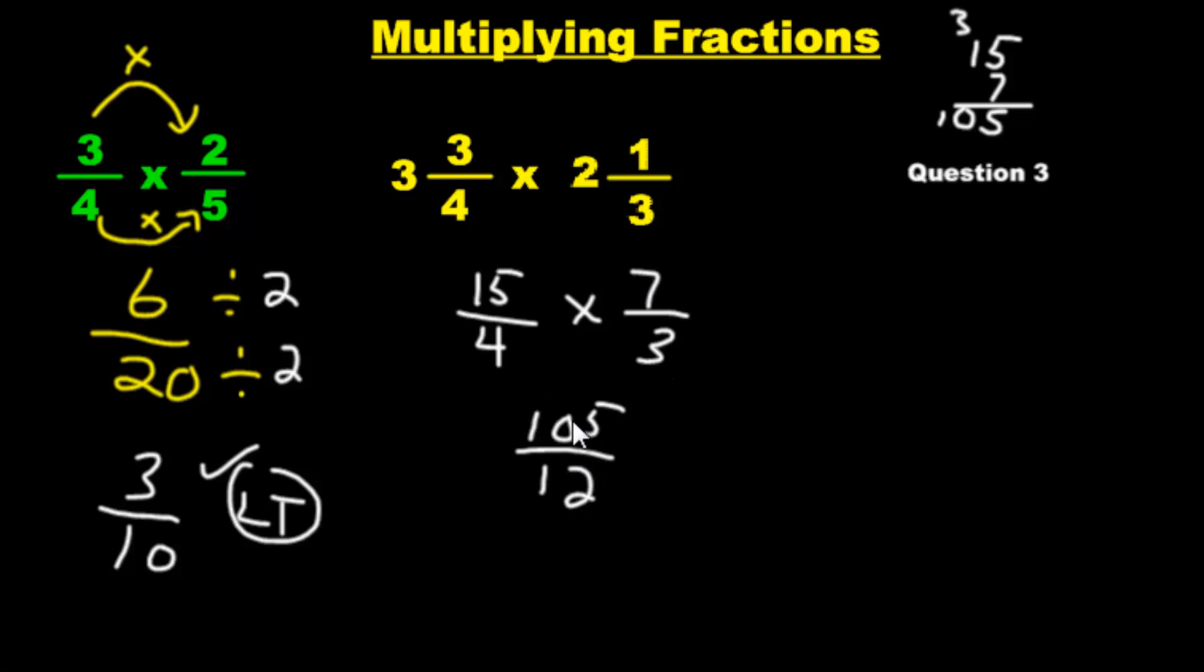Oh, not quite. We have to reduce. Well, what goes into 105 and 12? Well, 3 goes into 12, right? Does 3 go into 105? Yes, it does. How did I know so fast? Because the rule that you learned last year, and go back to those lessons if you don't remember. You add up the digits. 1 plus 0 plus 5 is 6. And since 6 is divisible by 3, then so is 105. So we're going to divide by 3, and we're going to divide by 3.